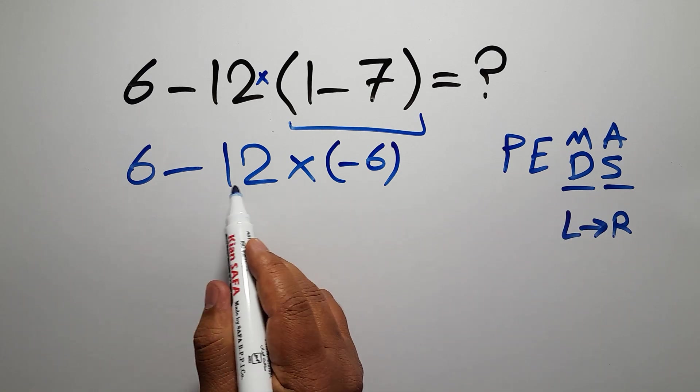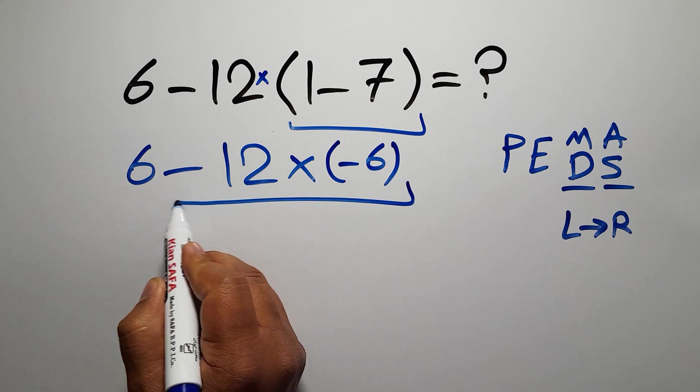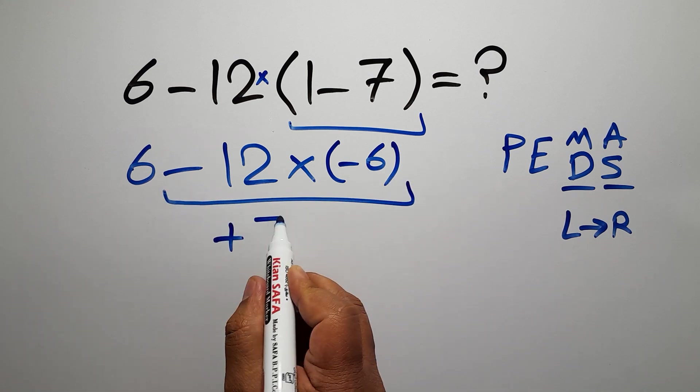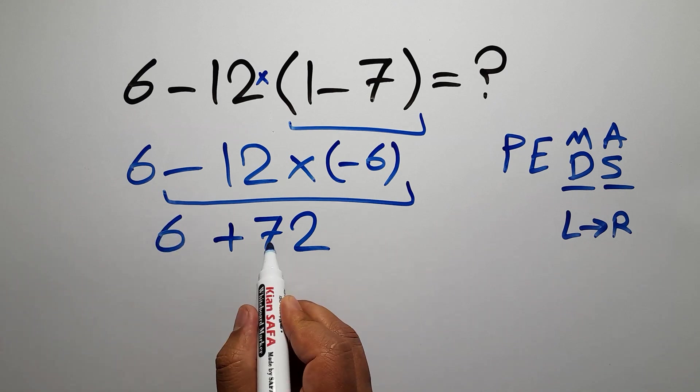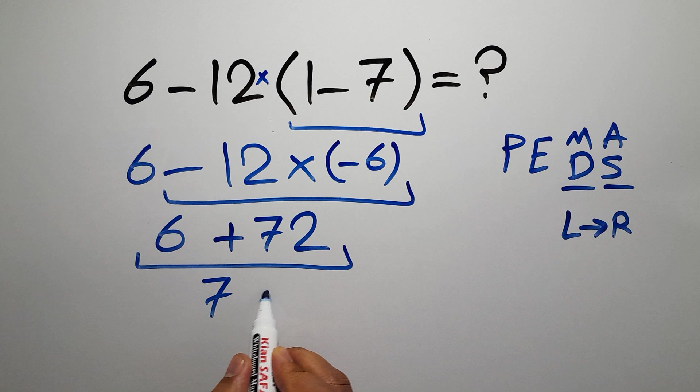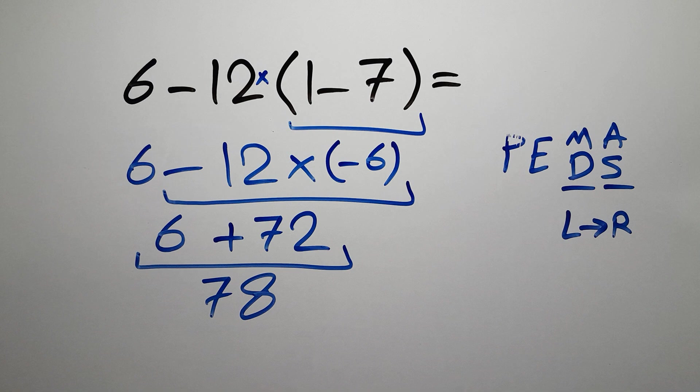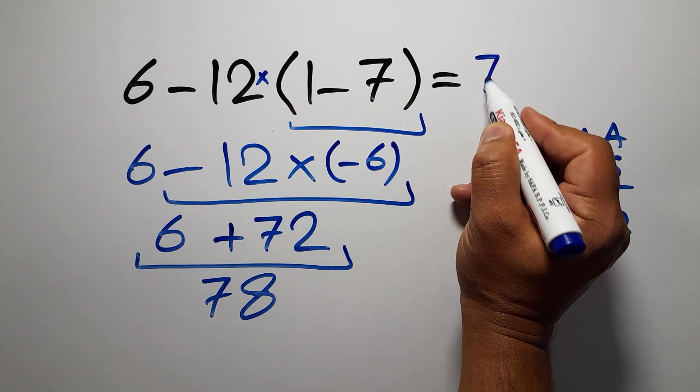So first this minus 12 times minus 6, which gives us positive 72. So we have 6 plus 72, which gives us 78. This is our final answer to this problem. The correct answer is 78.